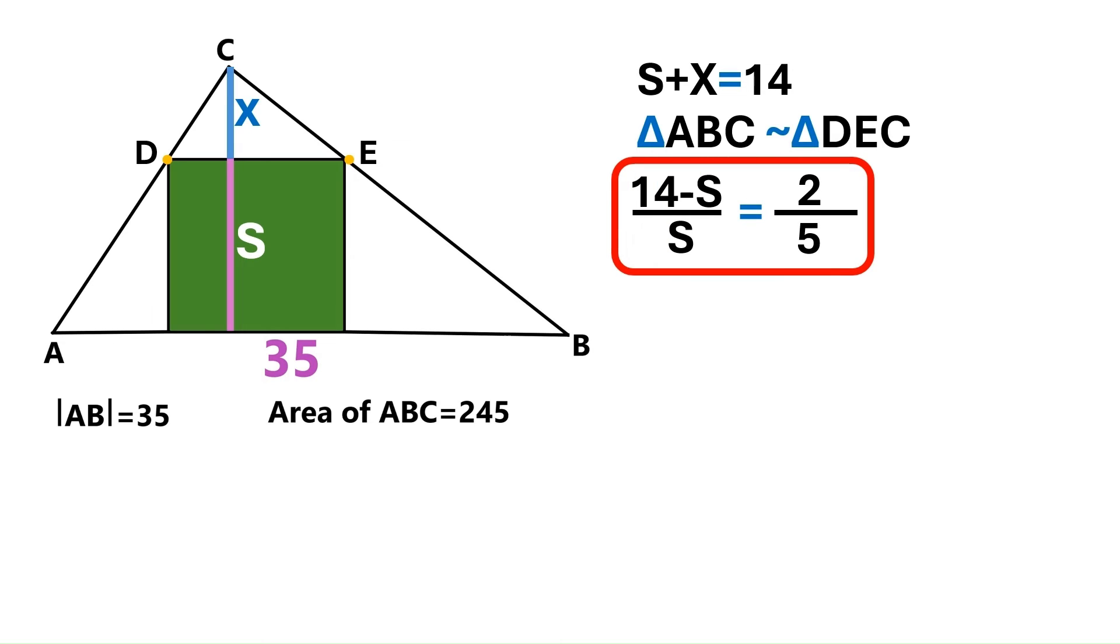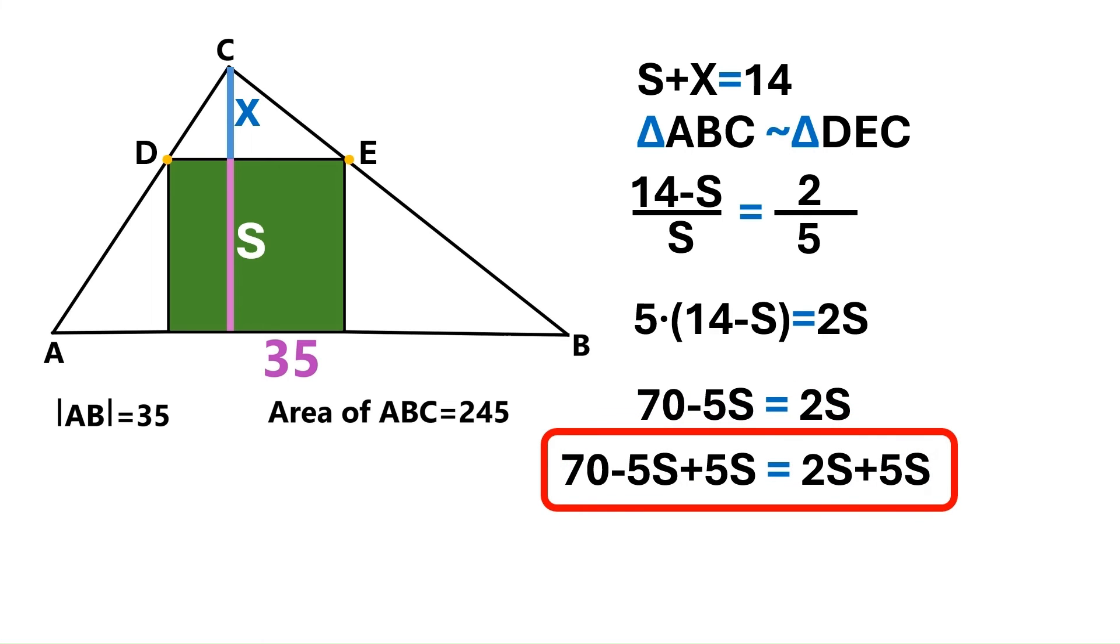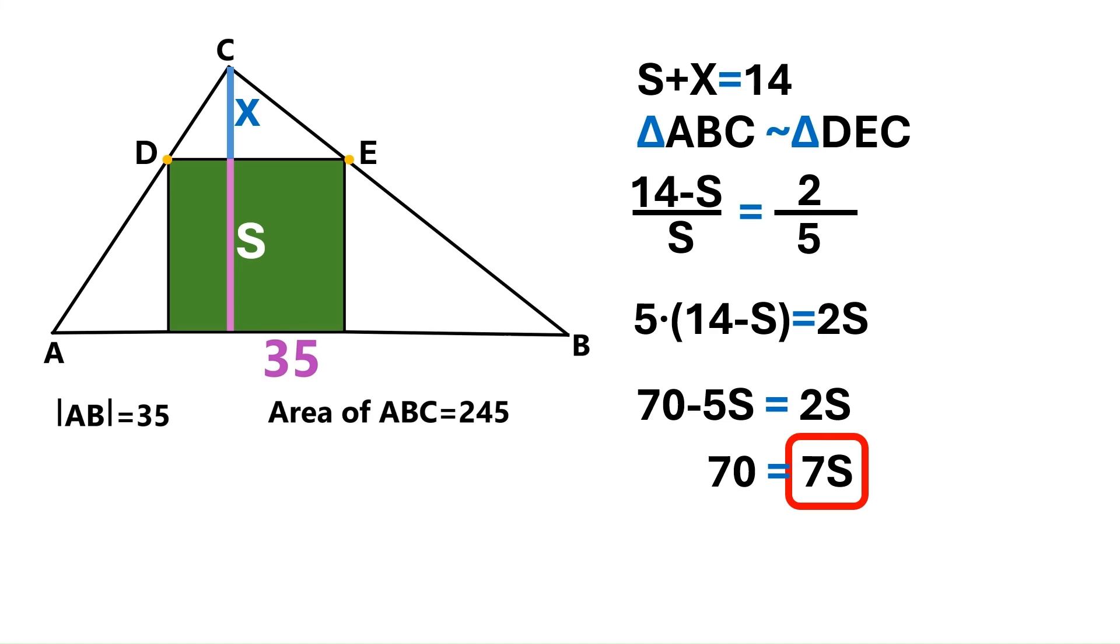Let's eliminate the fractions. We get 5 times (14 minus S) equals 2 times S. Let's remove these brackets here. 5 times 14 is 70, and it's minus 5S. Next we add 5S to both sides. We've got 70 here, and on the other side we have 7S. That takes us to the conclusion that S equals 10.